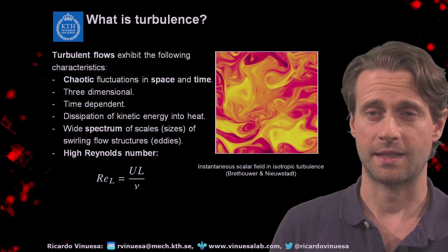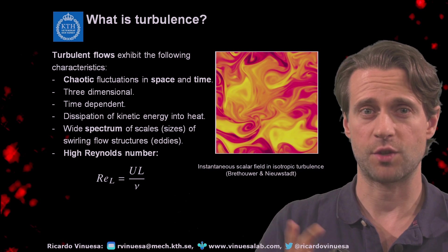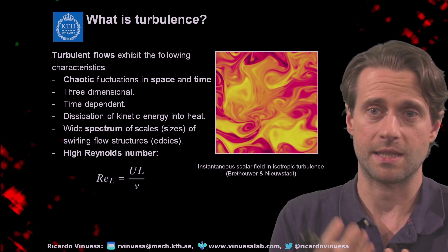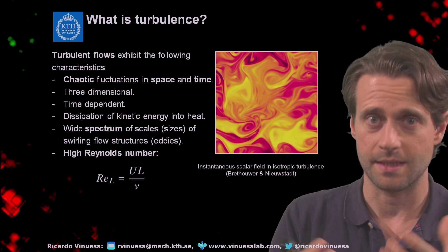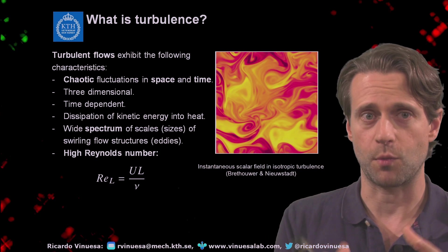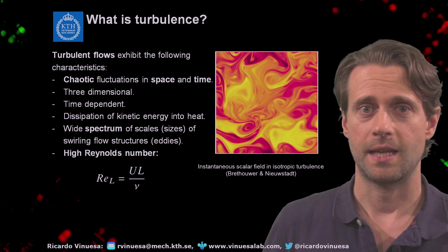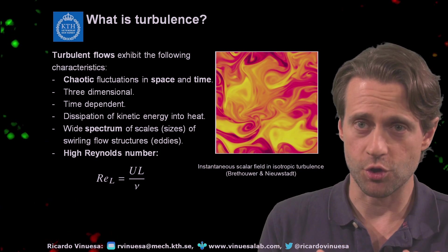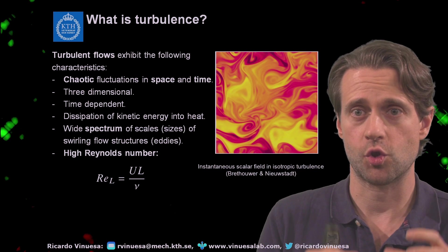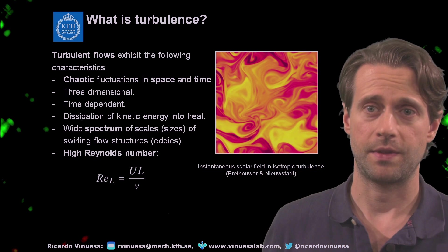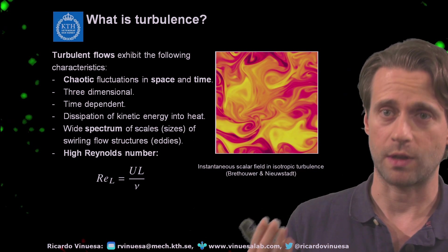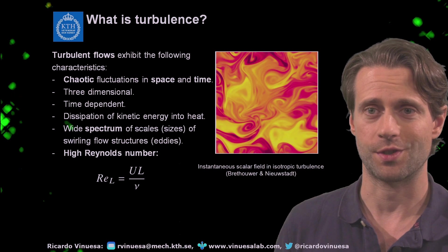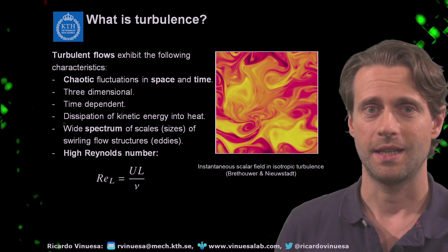Turbulence is characterized by a wide spectrum of scales, which are basically sizes of eddies, of coherent motions. And these coherent motions — these structures — are usually called eddies, but we will see many other nomenclatures later on.